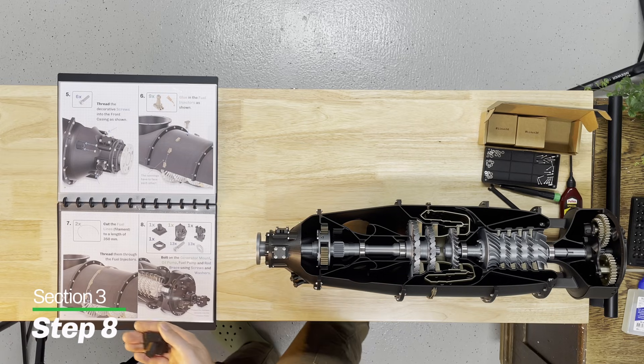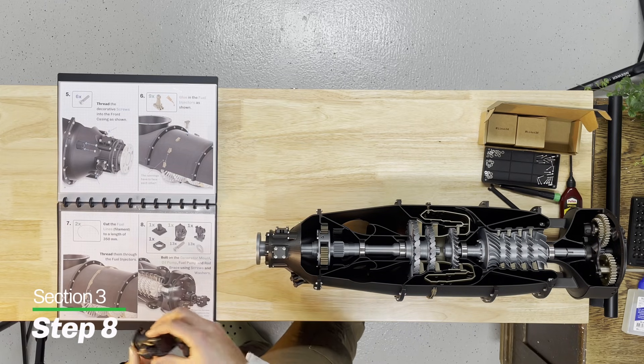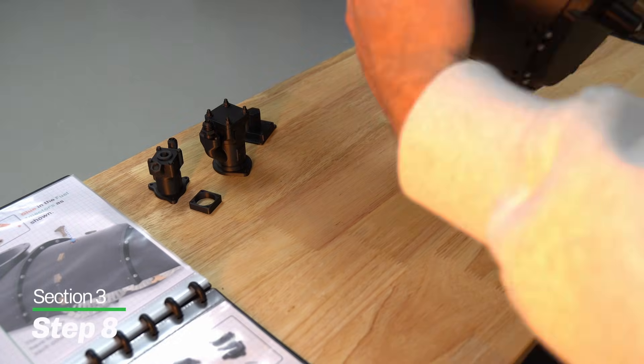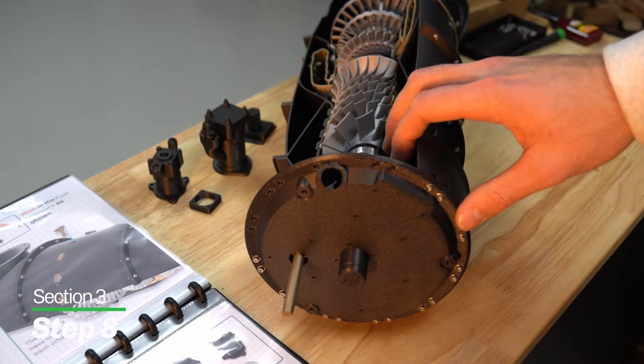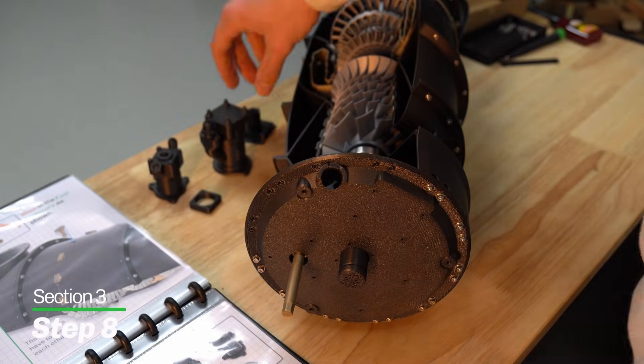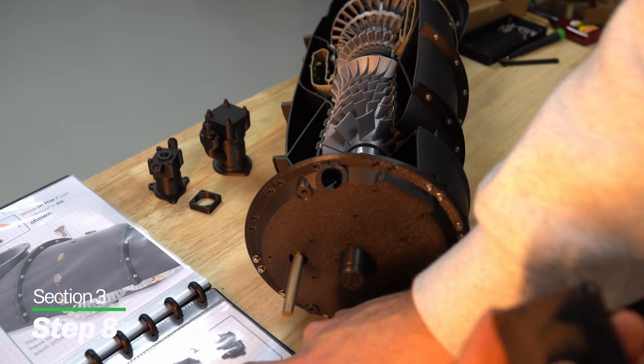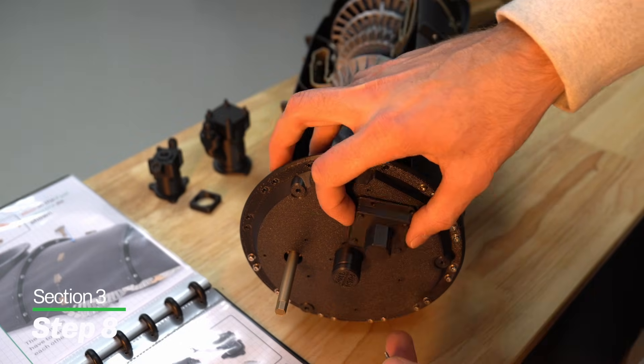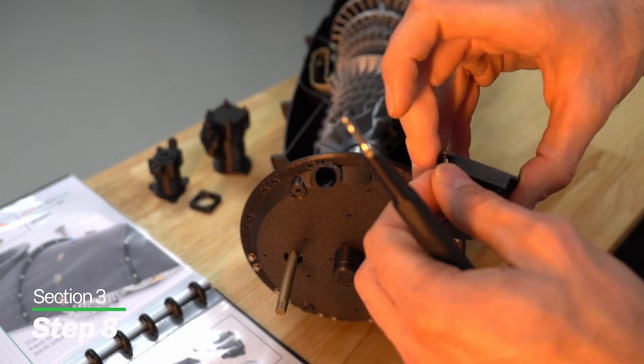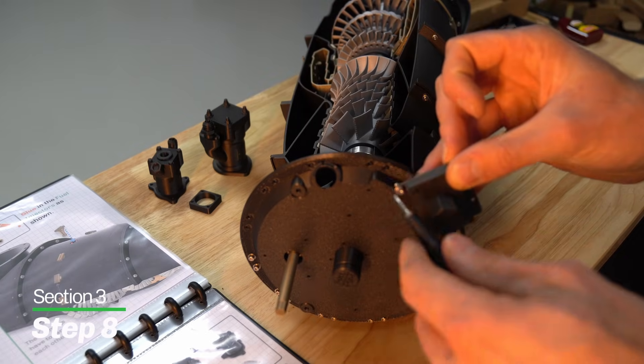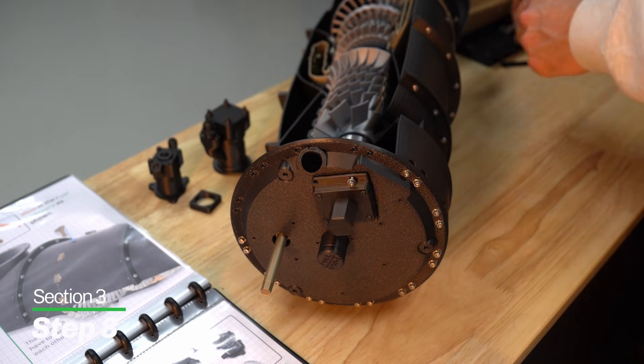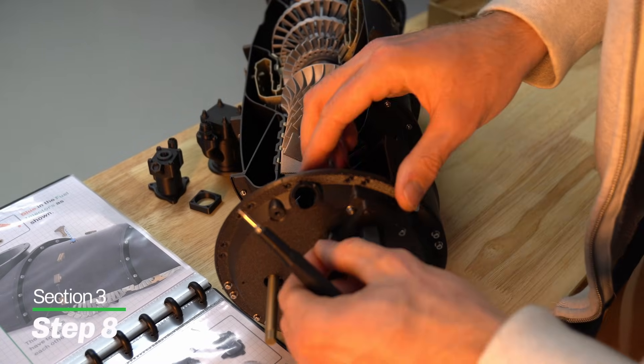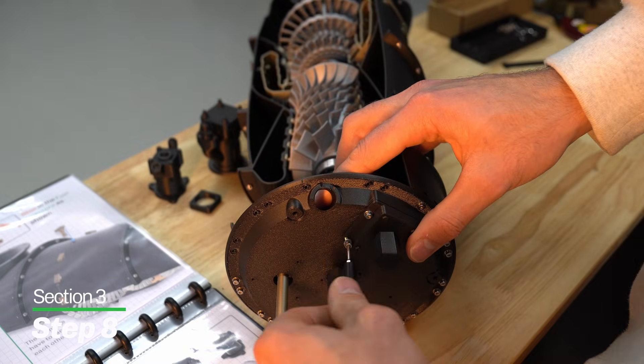On to step number eight, which is a big one. We're going to grab the generator mount, our oil pump, our fuel pump, and our rod brace, which is the center part. We're going to focus on the back part of the engine. Remember, on the cheese plate, this flat part is the top. We're going to grab our generator mount, and we're going to use screws and washers, no nuts needed. This is going to self tap into the cheese plate. There is a right and wrong orientation, but if you just open your eyes, you'll be able to tell. All this tightening down screws makes your wrist go tired, which of course is a feature, built-in wrist workout.